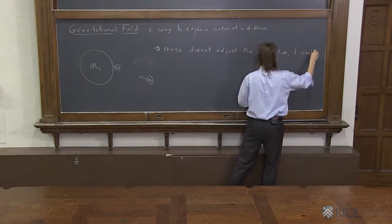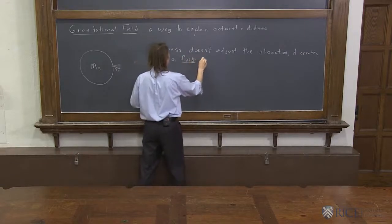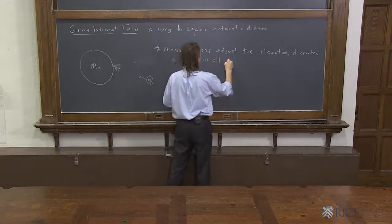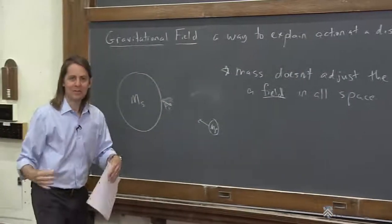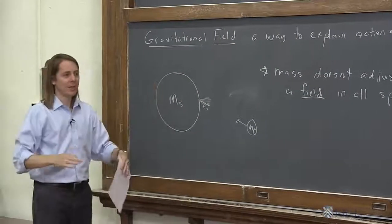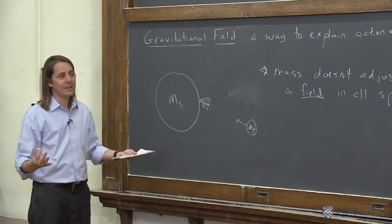So mass doesn't adjust the interaction. It creates a field in all space. That way it doesn't have to keep up with what's happening at every point and whatever the other object's doing. It just modifies space everywhere around it. That's the idea of a field.